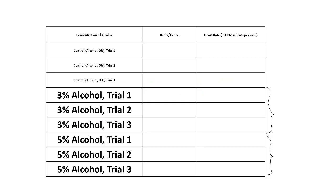By now you should have counted beats in 15 seconds for 3% alcohol and 5% alcohol in the first try. Convert this number to beats per minute. Watch this video two more times and complete these cells and calculate beats per minute.